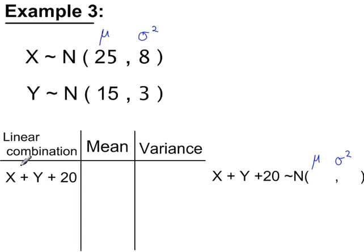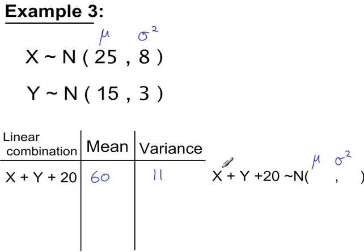Example 3: x plus y plus 20. For the mean, it's the mean of x plus the mean of y plus 20, so 25 plus 15 plus 20, giving a new mean of 60. For variances, we add the variance for x and the variance for y, but 20 does not have a variance. So the variance is 8 plus 3, equal to 11. So the normal variable x plus y plus 20 has a mean of 60 and a variance of 11.